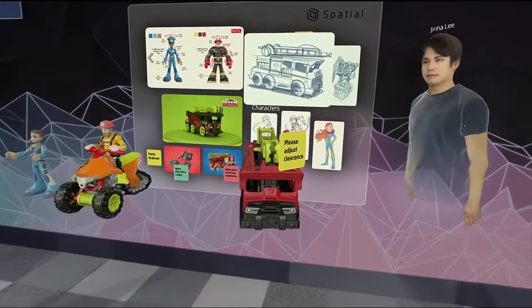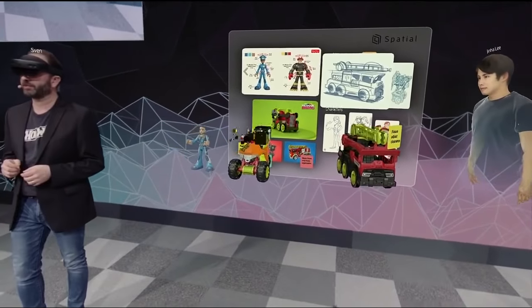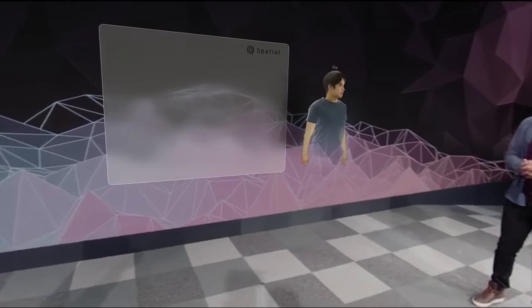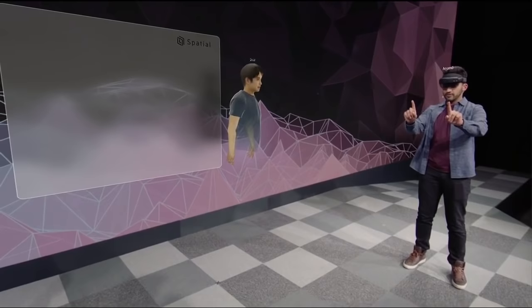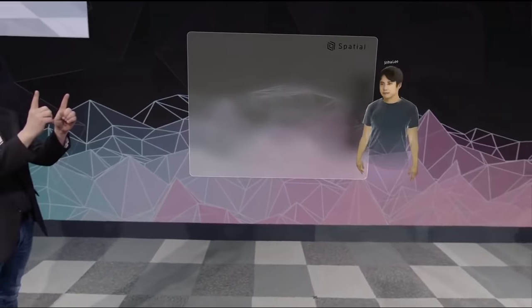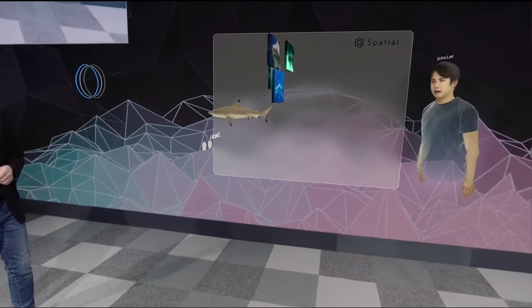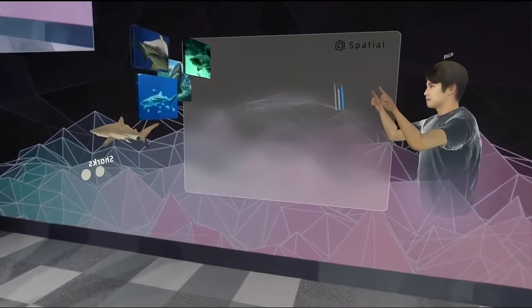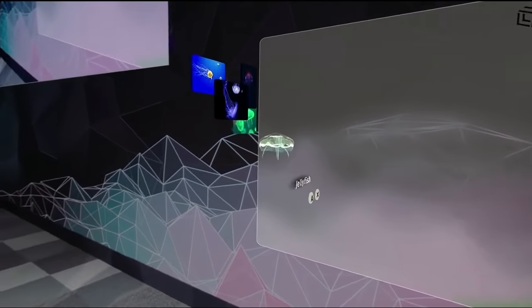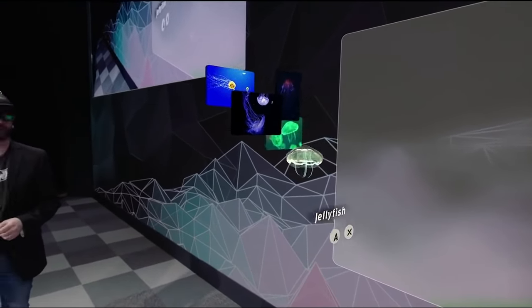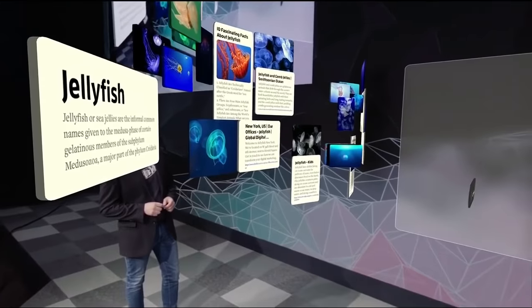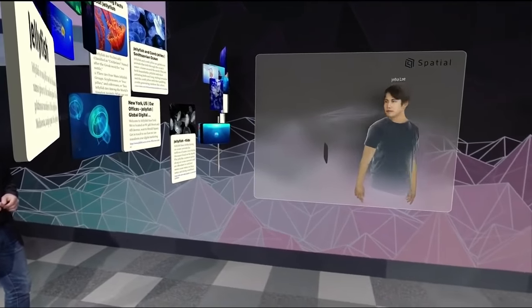We can also use Spatial much earlier in our design process to ideate and generate inspiration. Okay, guys, let's come up with some ideas for a line of aquatic toys. How about sea turtles? Oh, that's really cool. Let's try sharks. That's cool. How about jellyfish? So, all we have to do is say the words, and they're instantly visualized right before our eyes. You can even click into one of these bundles, and they expand into a full-blown internet search, complete with 3D models, images, and web pages. Why don't we click and adjust the images here so we can get some good inspiration for this new aquatic line?